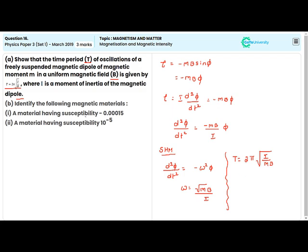Identify the material having a susceptibility of minus 0.005. This material is a diamagnetic material. And second one, a material having a susceptibility of 10 to the power of minus 5, this is the paramagnetic material.